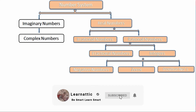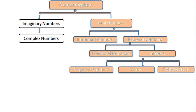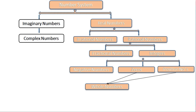Zero and positive numbers are included in whole numbers, so whole numbers consist of zero and positive numbers. These positive numbers are also included in natural numbers.